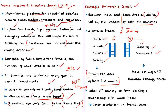The second track of the Strategic Partnership Council focuses on economy and investment, headed by the Minister of Commerce and Industry of India and the Energy Minister of Saudi Arabia. India is the fourth country to form a strategic partnership with the Kingdom of Saudi Arabia; the other countries are the United Kingdom, France and China.